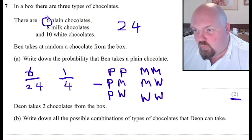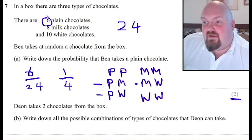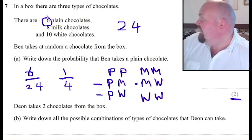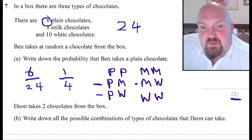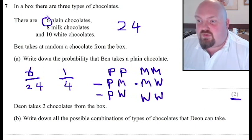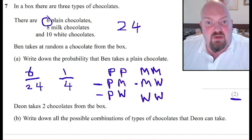He could also take a white and a white. We don't need to write white and milk because it's there. And we don't need to write plain and milk because it's there. So in total, he can take six possible combinations. So six possible combinations gives us the number of ways that he could take two chocolates out.